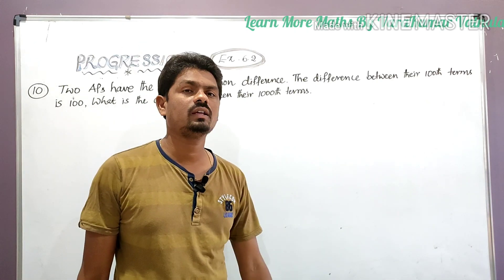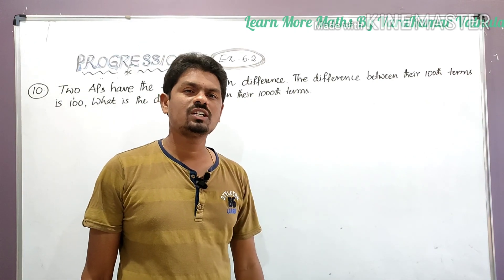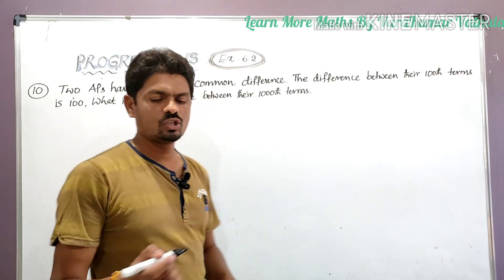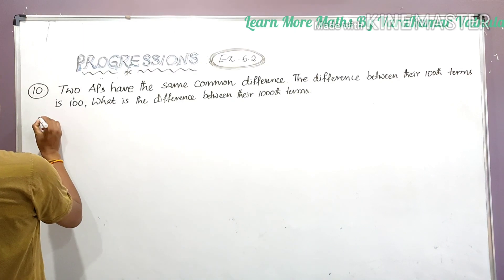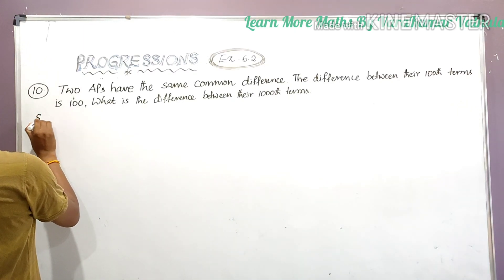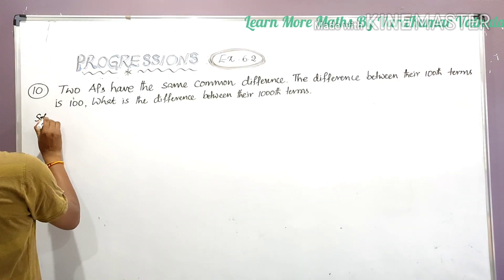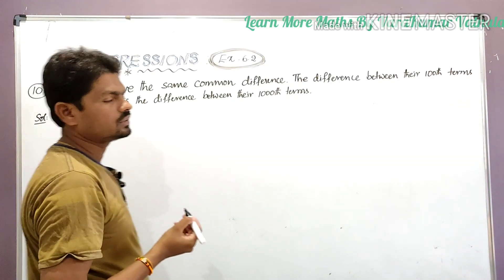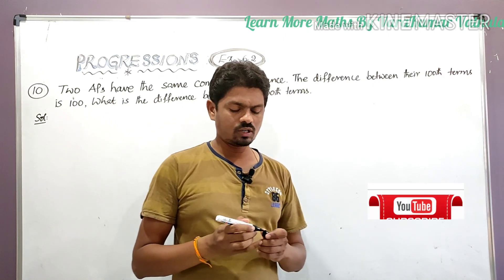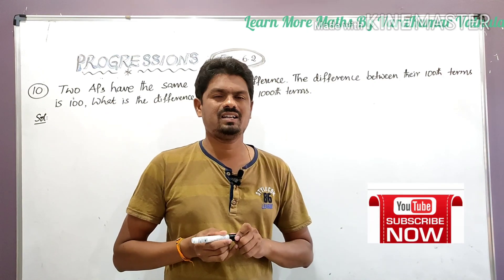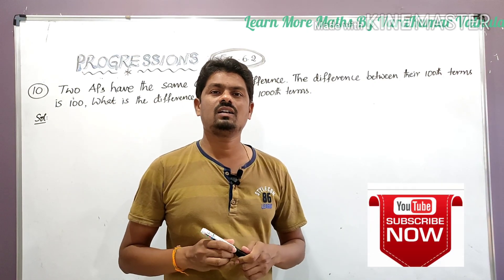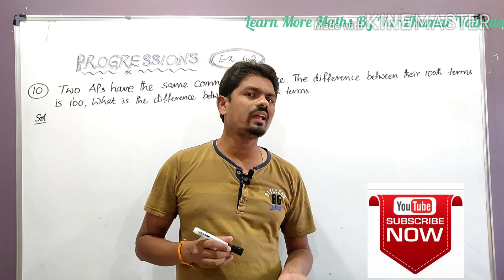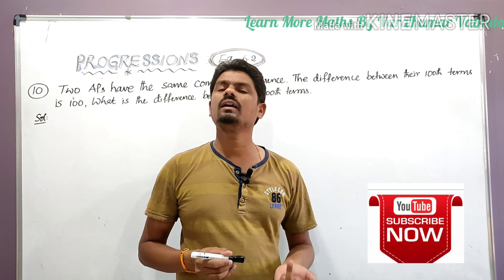Let's see how we can solve this. The hundredth term of an AP is denoted by a₁₀₀. We can write a₁₀₀ as a plus 99d.